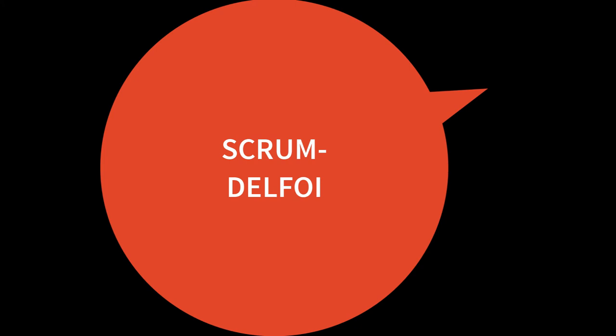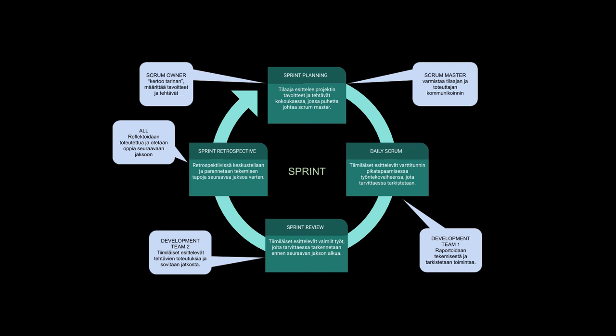Scrum on projektinhallintamalli, jota käytetään yleisesti niin sanotussa ketterässä ohjelmistokehityksessä. Mallissa monitaitoinen eli cross-functional ryhmä suorittaa kehitysprosessin alusta loppuun vaiheistuksella, joka perustuu jatkuvaan vuorovaikutukseen ja selkeisiin rooleihin. Ryhmän toiminta on verrattu rugby-joukkueeseen, jossa koko ryhmä pyrkii etenemään yksikkönä. Scrumin perusideat esittivät japanilaiset Hirotaka Takeuchi ja Ikujiro Nonaka jo vuonna 1986. Scrum sopii mainiosti Delphoi-menetelmän kaveriksi, sillä molemmat ovat rakenteisesti vaiheistettuja ja roolitettuja vuorovaikutusprosesseja, joissa pyritään selkeään tulokseen – tietoon, ymmärrykseen, palveluun tai päätökseen, jota ei aikaisemmin ole ollut.